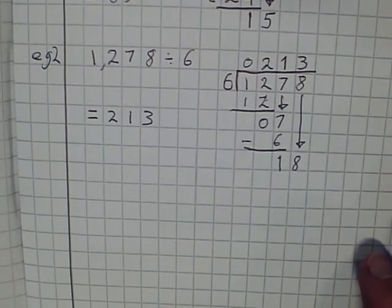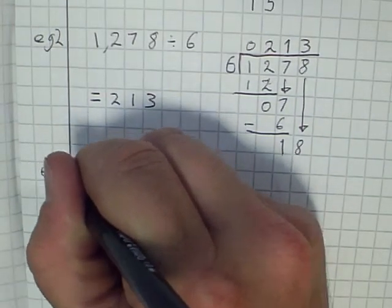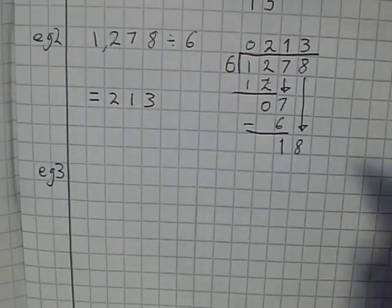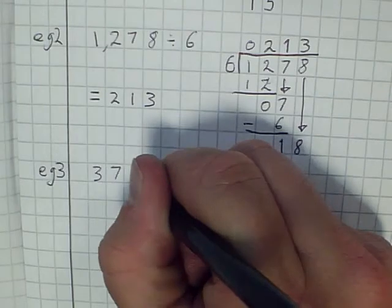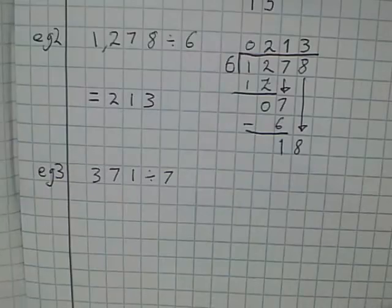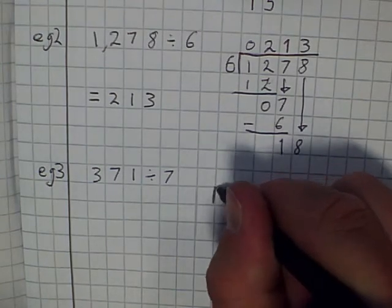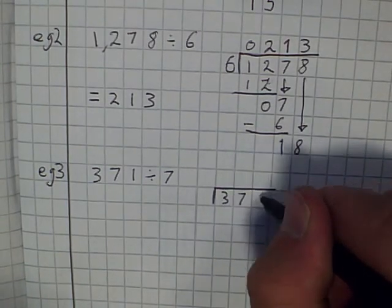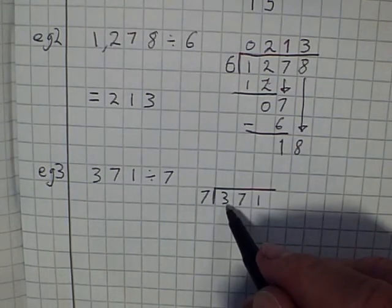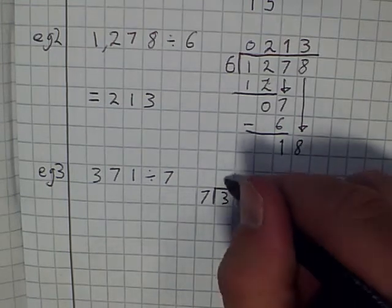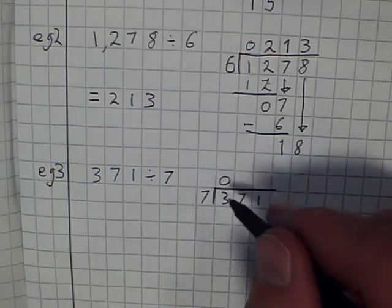Right, let's have a look at another example. EG3. So I'm going to take 371 and divide it by 7. So I'm going to set my bus stop out. And it's 371 in here and I'm dividing it by 7. So 7 goes into 3 not at all. 7 goes into 37, how many times?